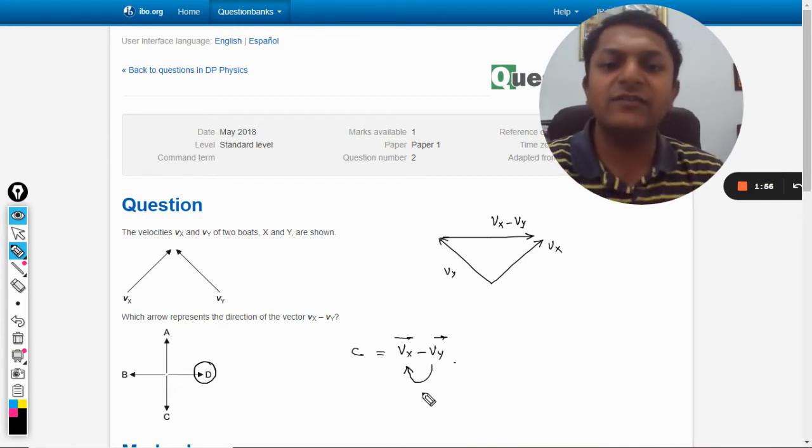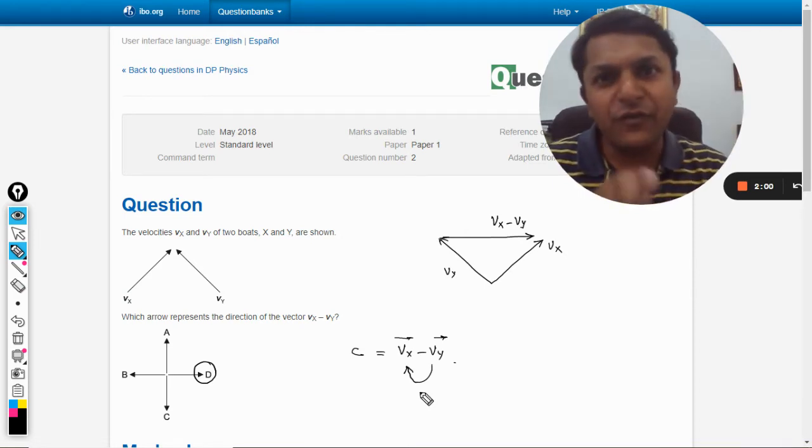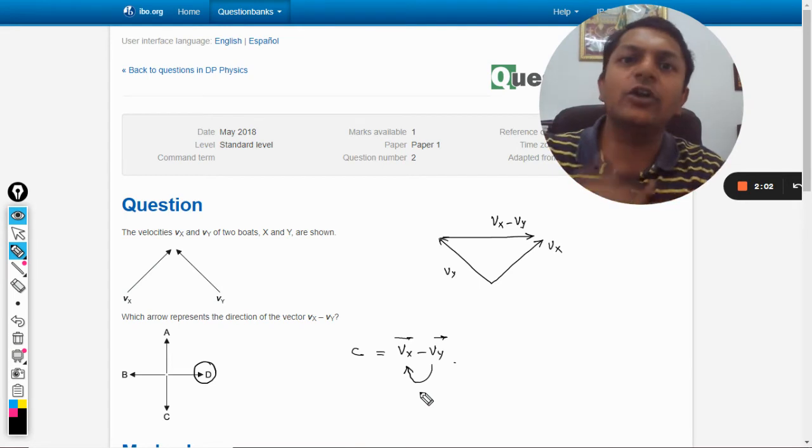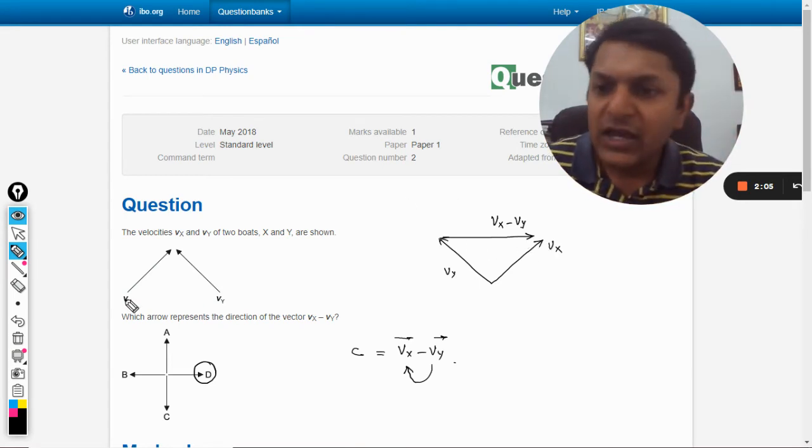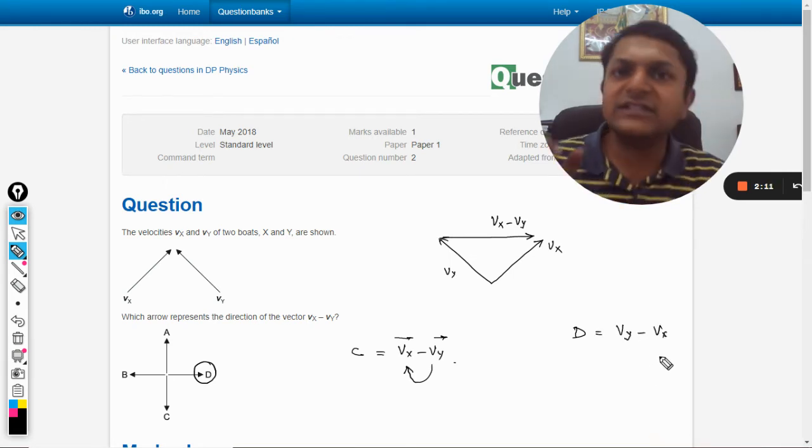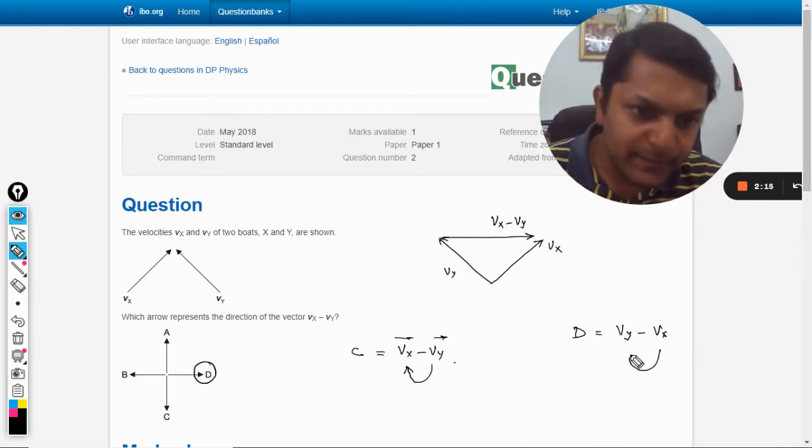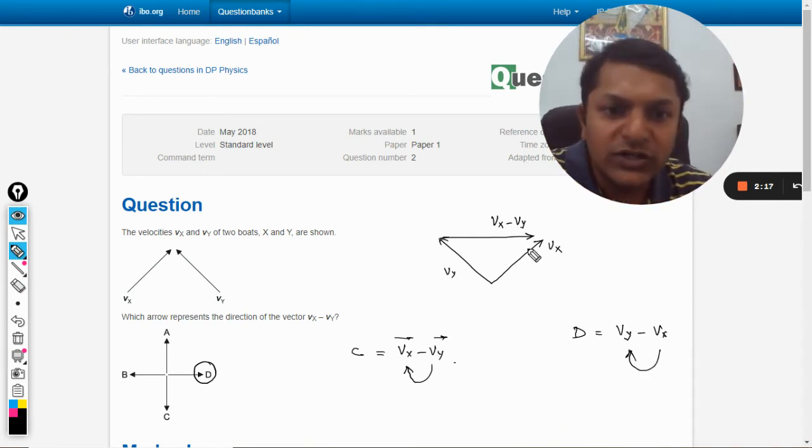I hope you understand what we have done. We have subtracted these two vectors vx minus vy, so we will create a vector that will move from the head of y towards the head of x, and that is what we have done. If they would have asked us vy minus vx, we will start a vector from x and we will go towards y, from x towards y.